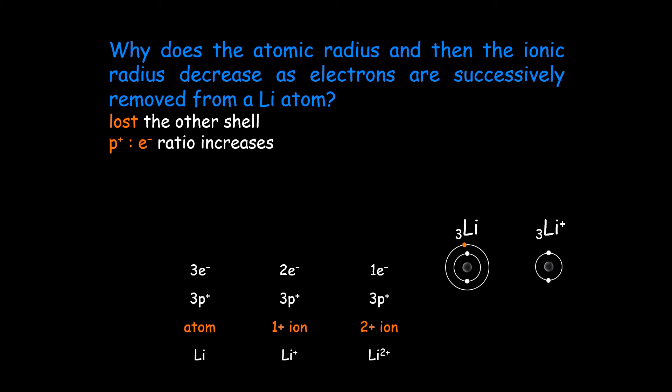we find that the proton to electron ratio increases. So therefore the electrostatic attraction between the nucleus and the electrons increases, pulling the remaining electrons closer to the nucleus.